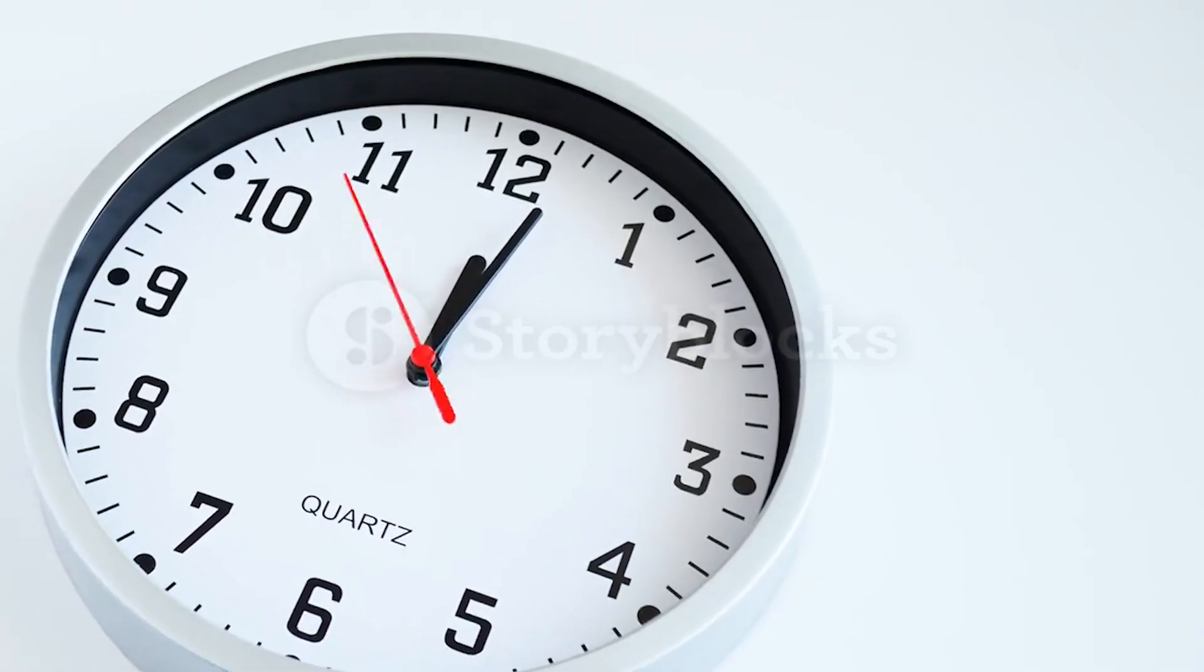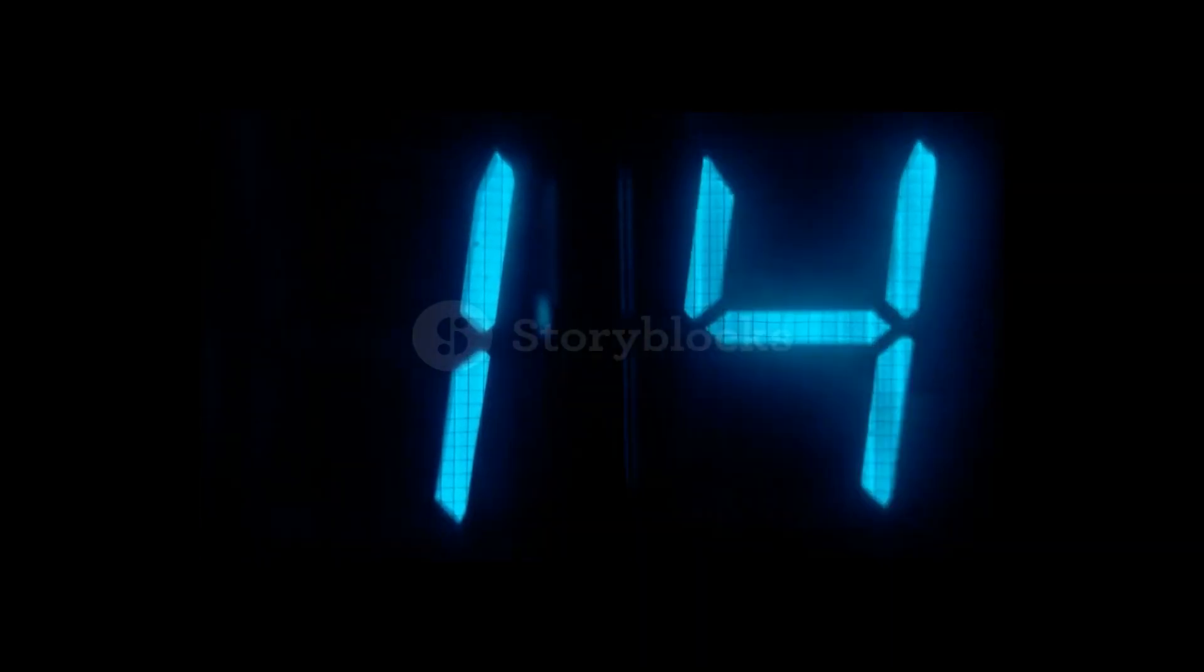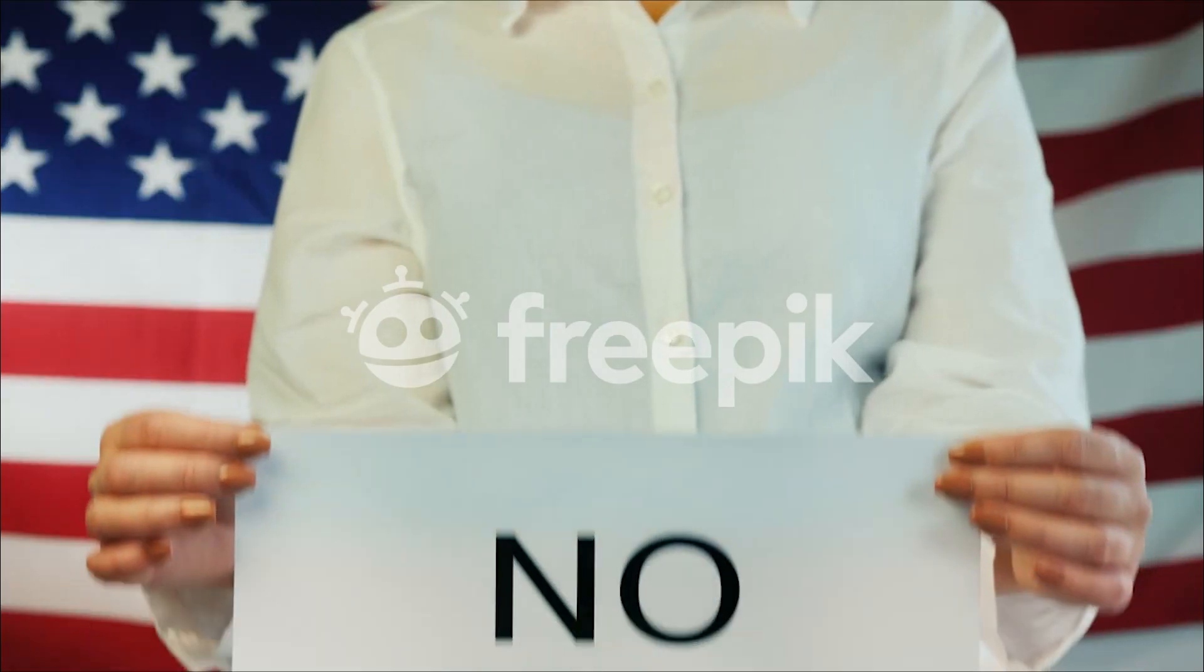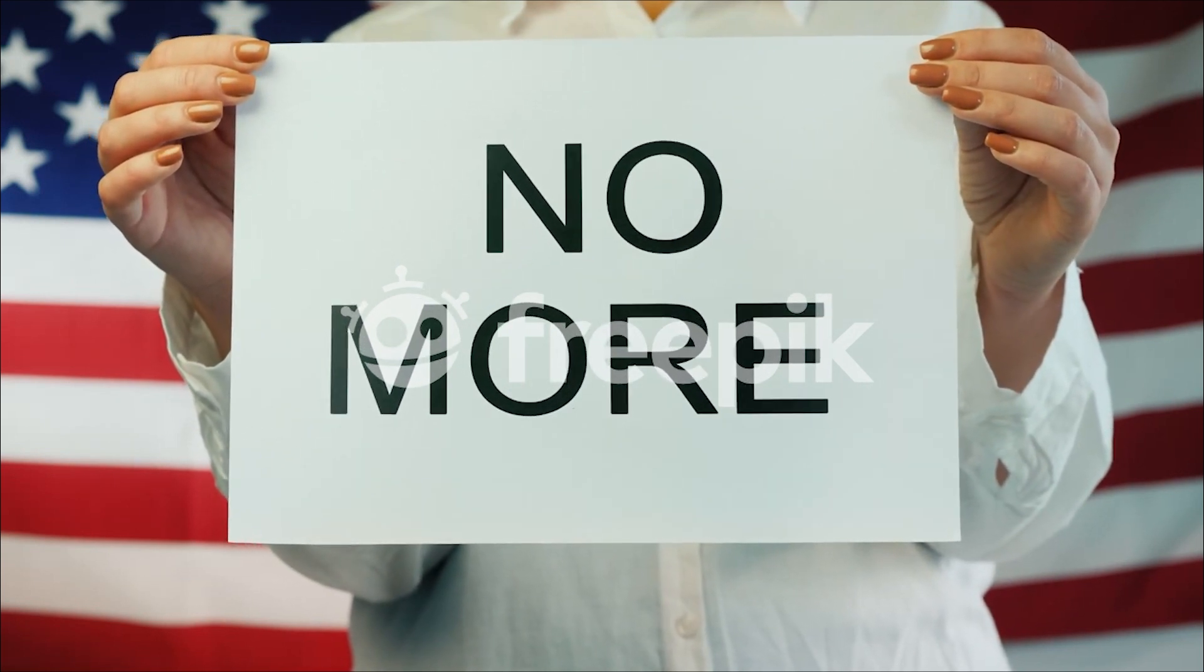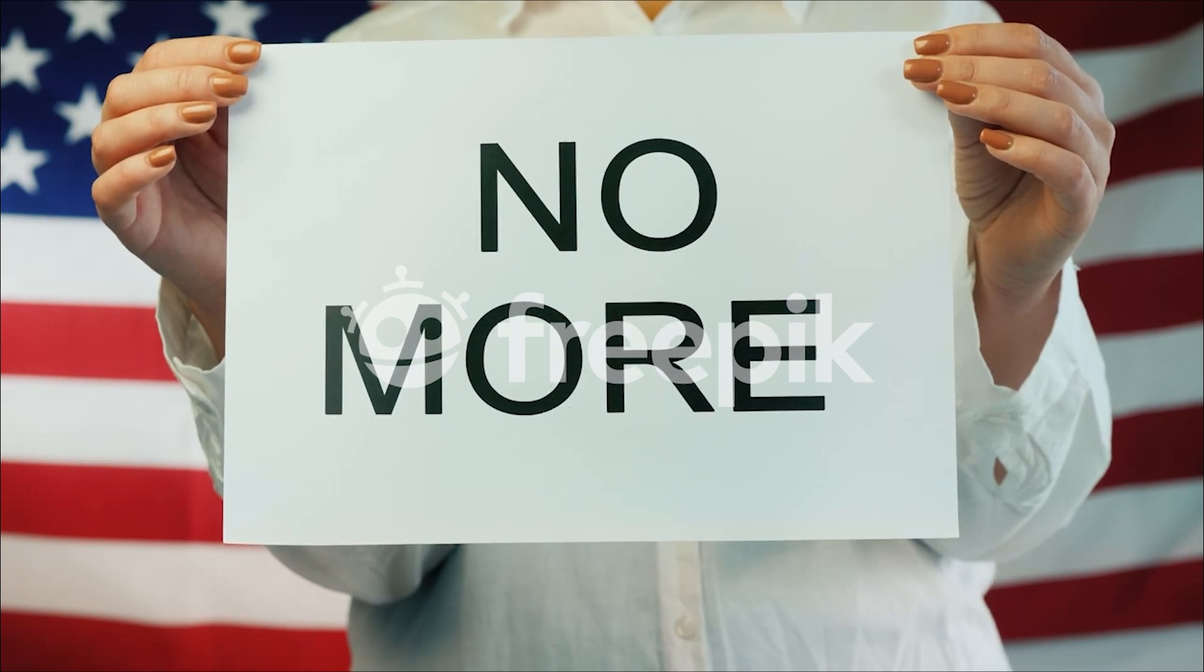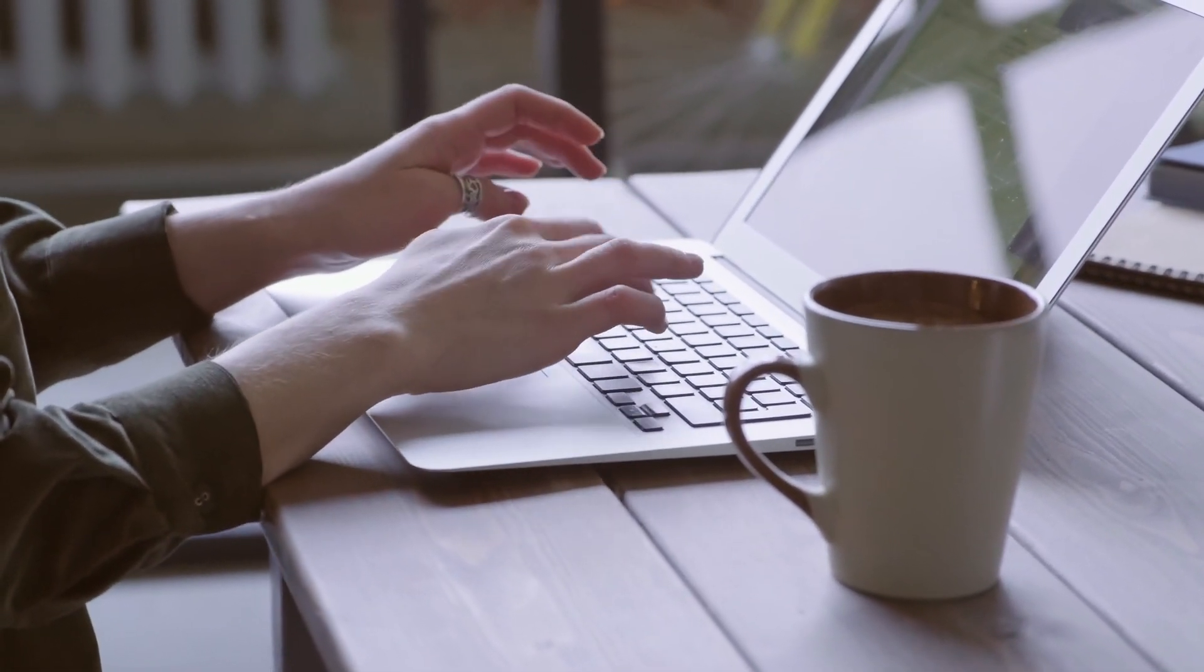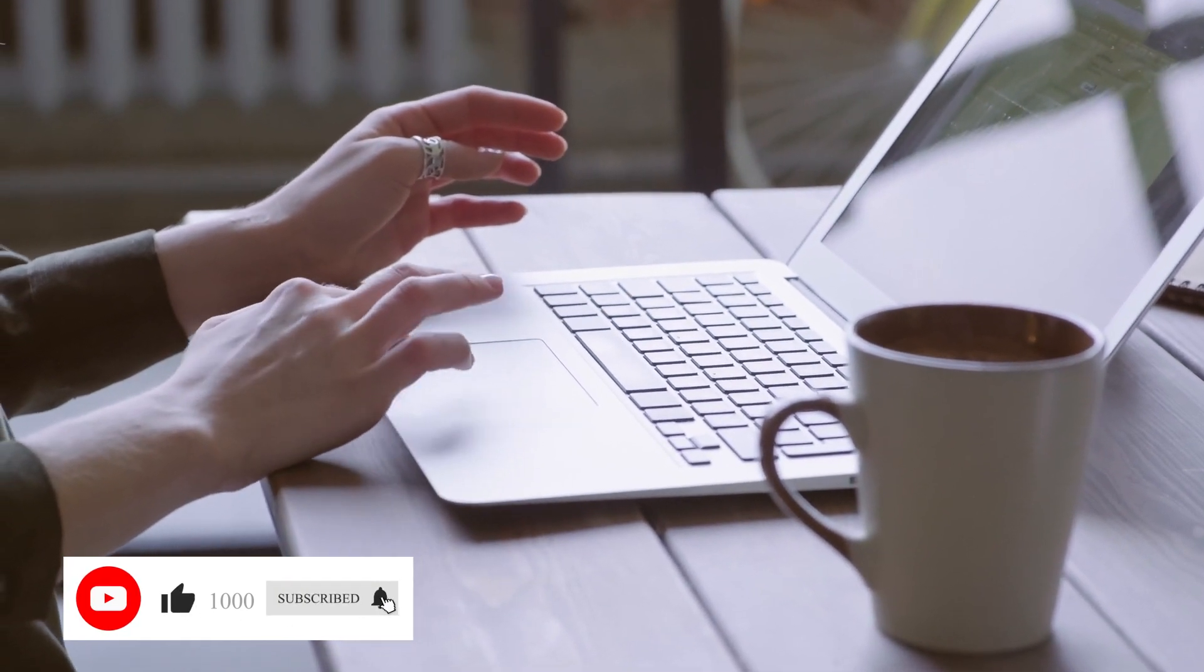Third, adopt productivity techniques. Explore different productivity techniques like the Pomodoro technique or the 80-20 rule. Experiment with these methods to find what works best for you. Fourth, learn to say no. Successful entrepreneurs understand the importance of setting boundaries and saying no to tasks or commitments that do not align with their goals. Prioritize your time and allocate it to activities that truly matter. Fifth, automate and streamline. Look for opportunities to automate repetitive tasks or streamline processes. Utilize technology and tools to simplify your work, saving time and effort.